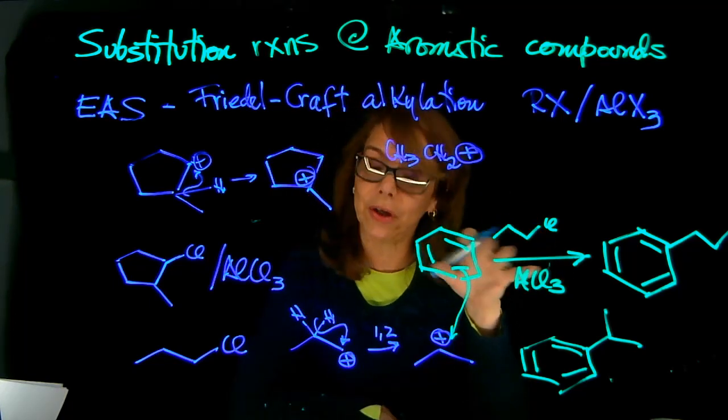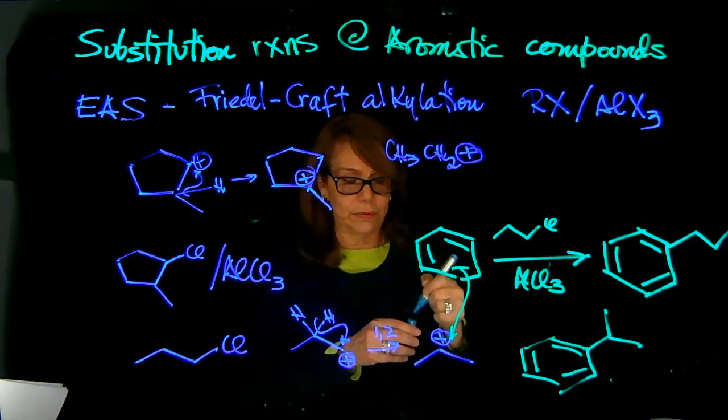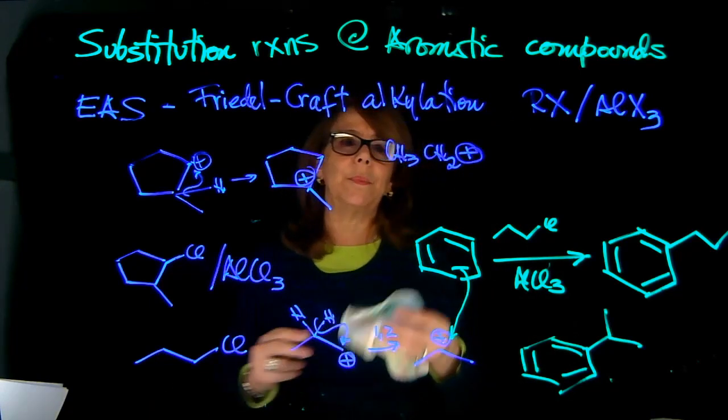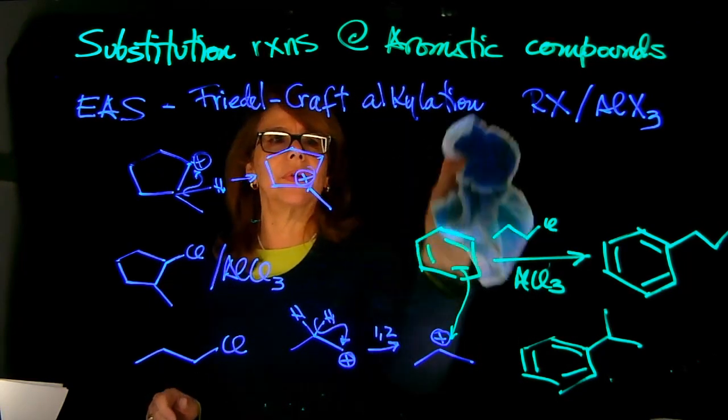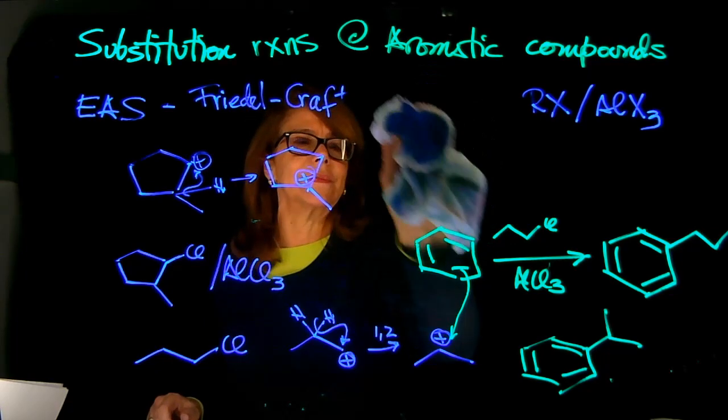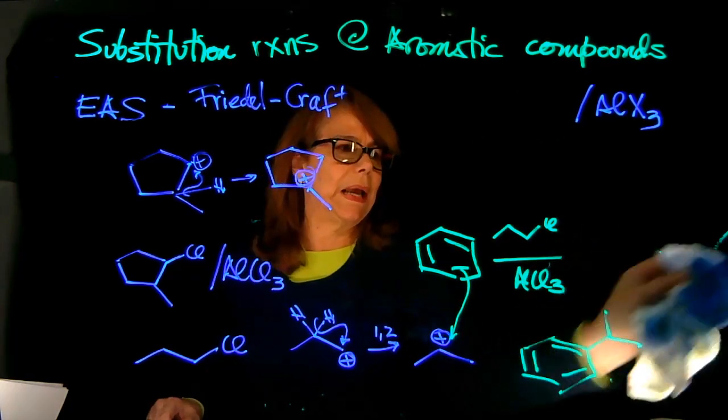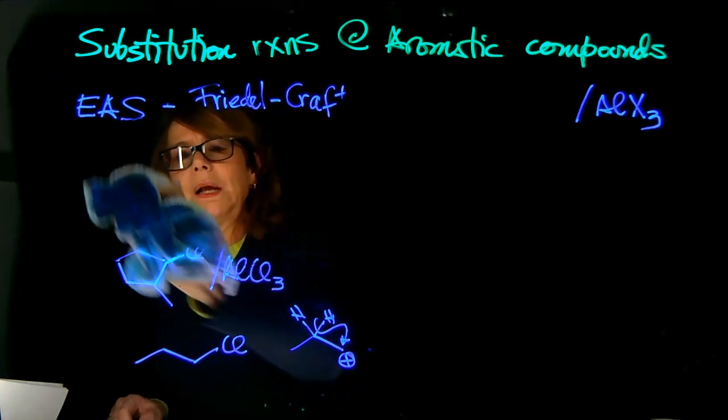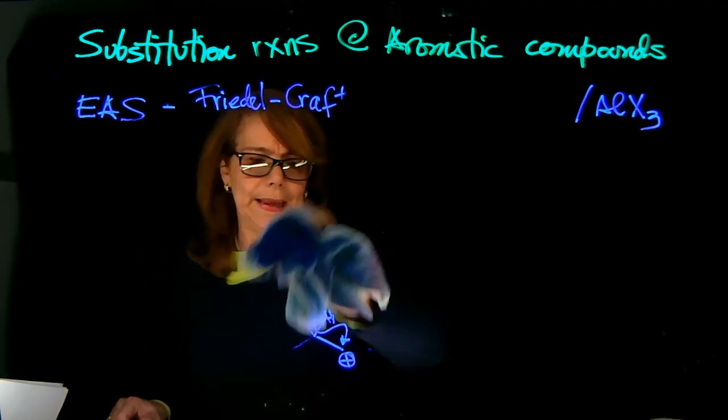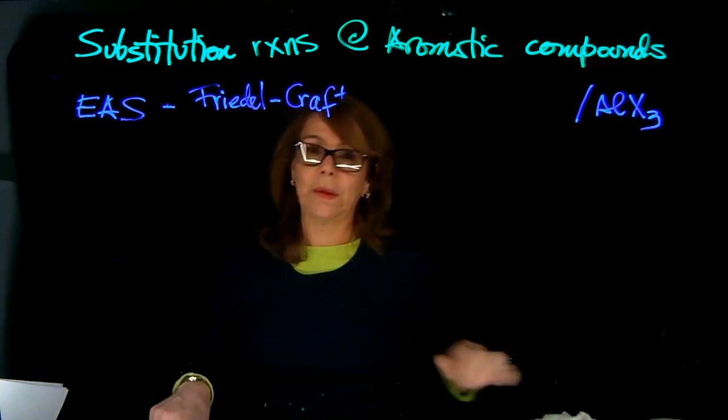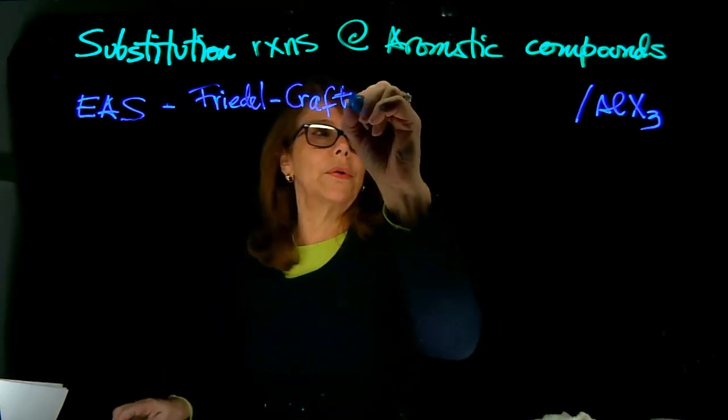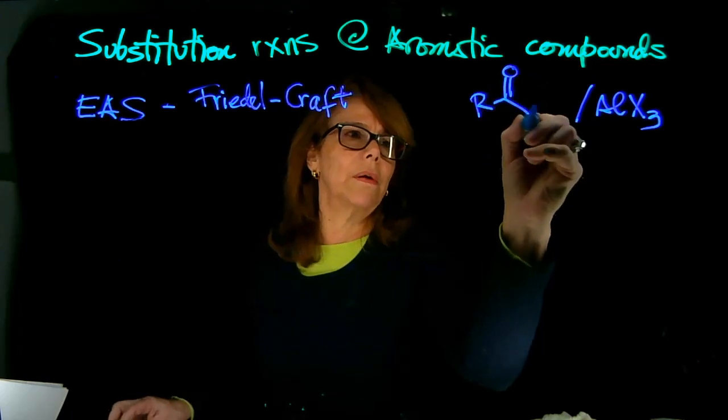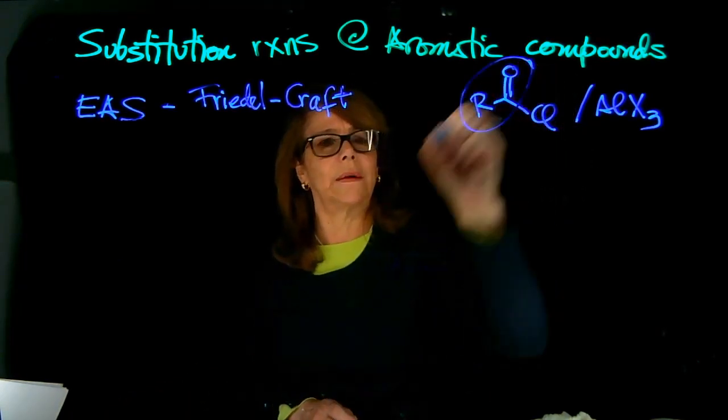So now we have another reaction, also called Friedel-Craft, that is the acylation. That helped us with the issue. Instead of alkylation, now we're going to be doing acylation. And installing, instead of an alkyl group, an acyl group here. So now you're using R-C-O-Cl. This is the acyl group.